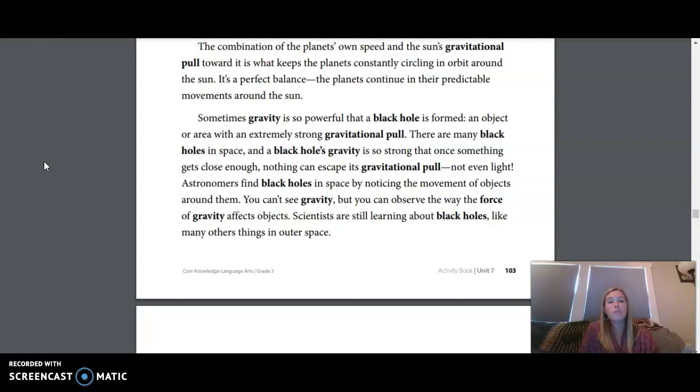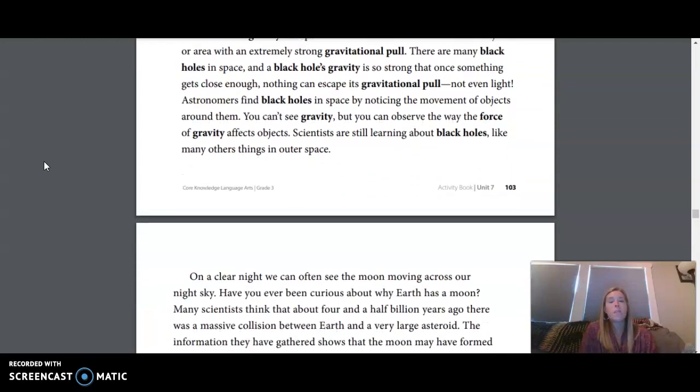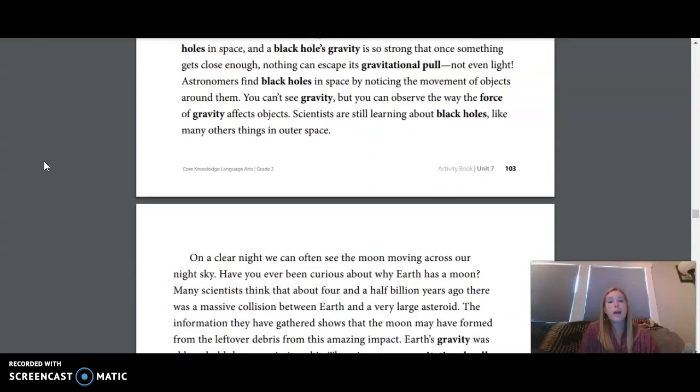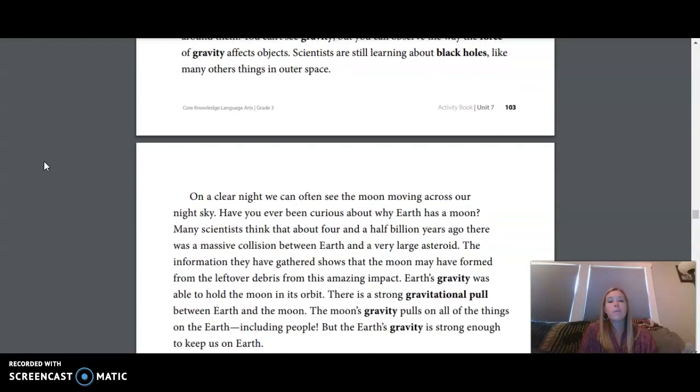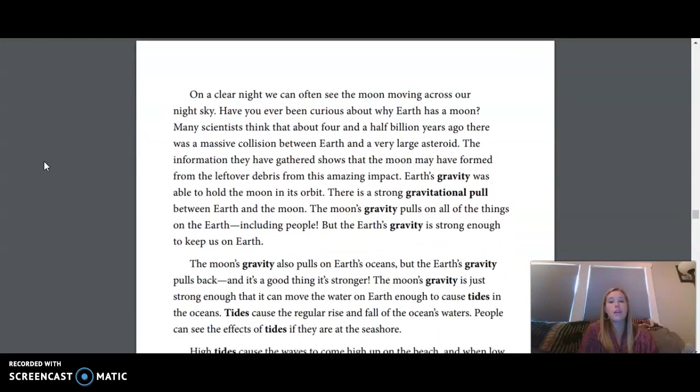Sometimes gravity is so powerful that a black hole has formed, an object or area with an extremely strong gravitational pull. There are many black holes in space, and a black hole's gravity is so strong that once something gets close enough, nothing can escape its gravitational pull, not even light. Astronomers find black holes in space by noticing the movements of objects around them. You can't see gravity, but you can observe the way the force of gravity affects objects. Scientists are still learning about black holes, like many other things in outer space.